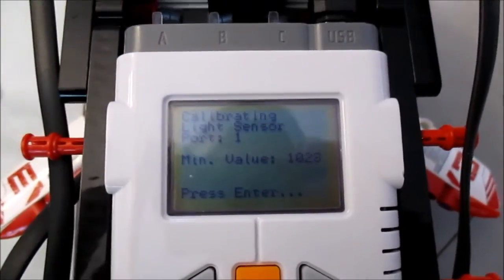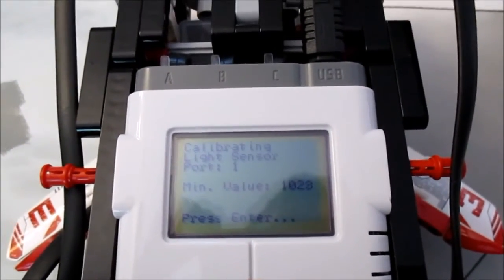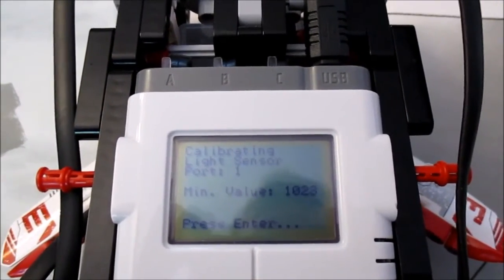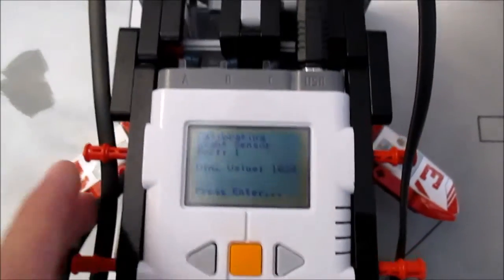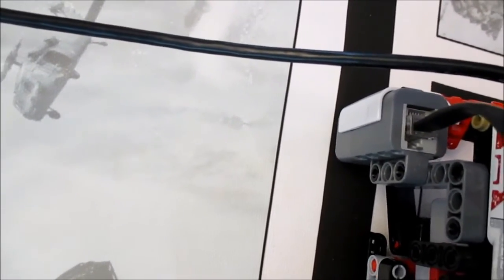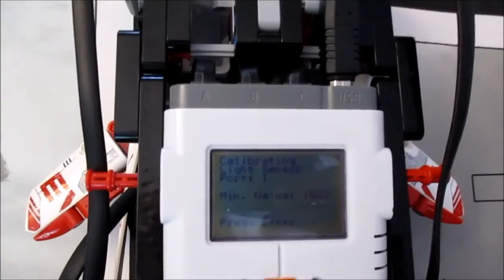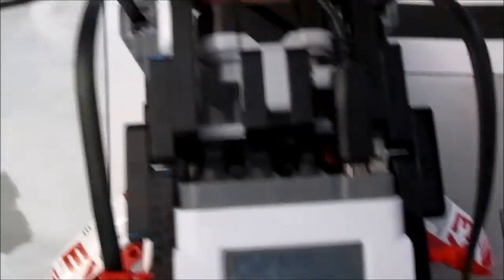First, on screen you're going to see it's going to say minimum value, and then give you the current reading in raw value. This is 1023, and for the minimum value, what you're going to want to do is place the sensor directly over the black line, or whatever the darkest thing that you're going to be measuring is. Keep in mind that we're measuring in port 1, because that's the port we selected. You want to be measuring on the correct sensor, otherwise it won't work.